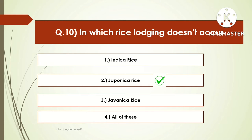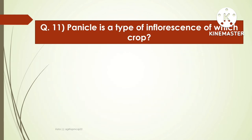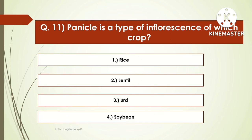The next question is: panicle is a type of inflorescence of which crop? Options are rice, lentil, wheat, or soybean. The right answer is rice. The panicle is a type of inflorescence of rice.